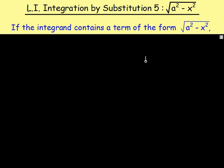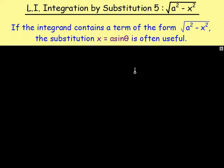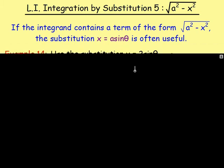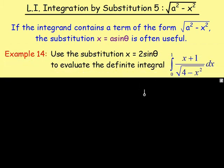If your integrand contains a term of the form the square root of a squared minus x squared, then it is often useful to use the substitution x equals a sine theta. Examples 1 to 13 are in previous integration by substitution lessons, so this is the 14th example, using the substitution x equals 2 sine theta.